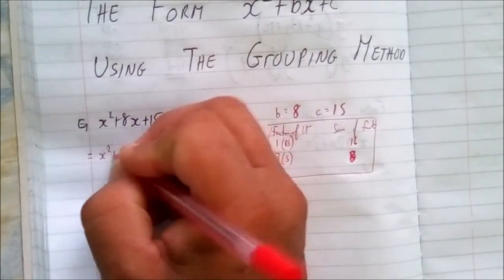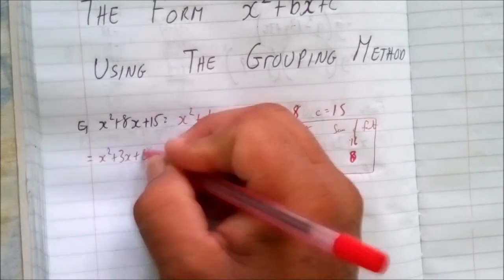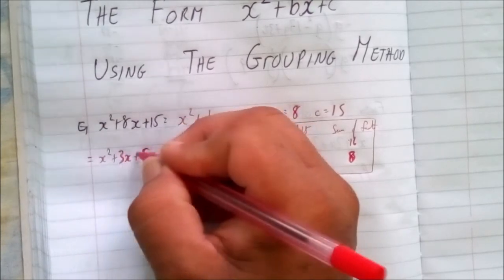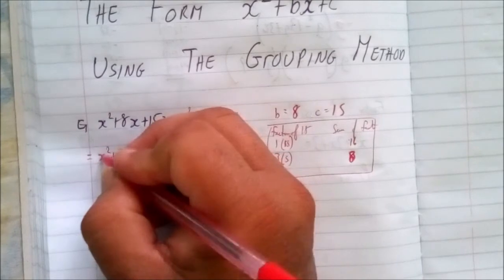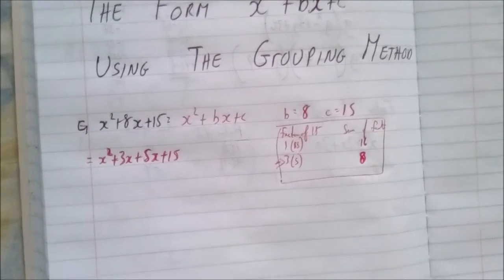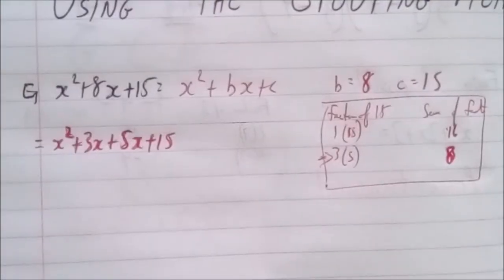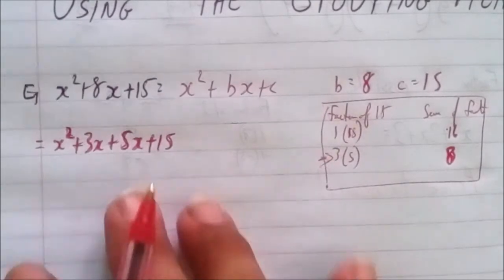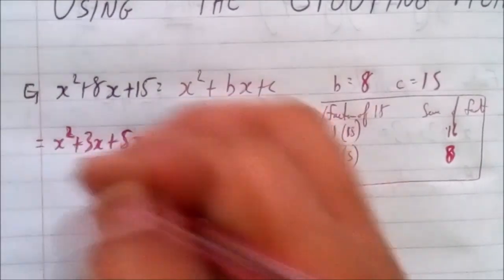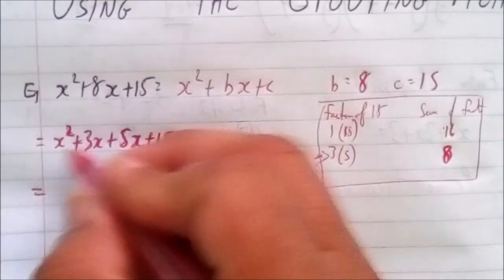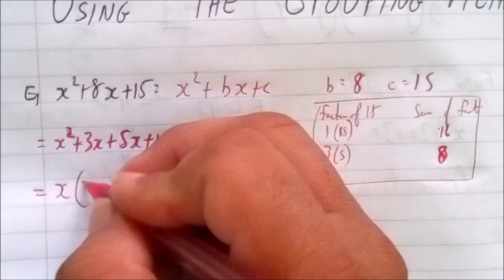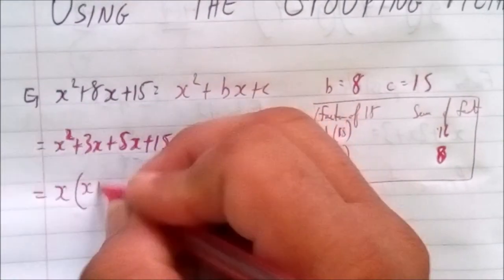We're now seeing x squared plus 3x plus 5x plus 15. We look at the first two terms — since both have x, we pull out the x: x squared divided by x gives x, and 3x divided by x gives 3.